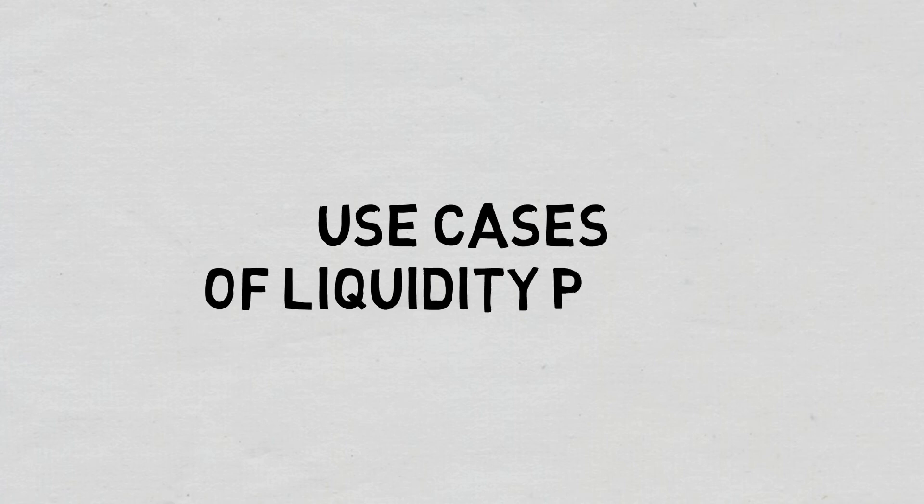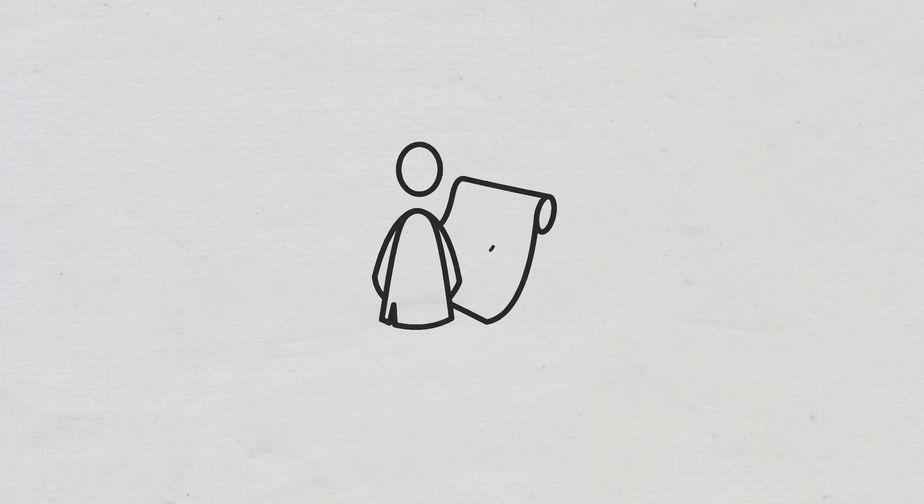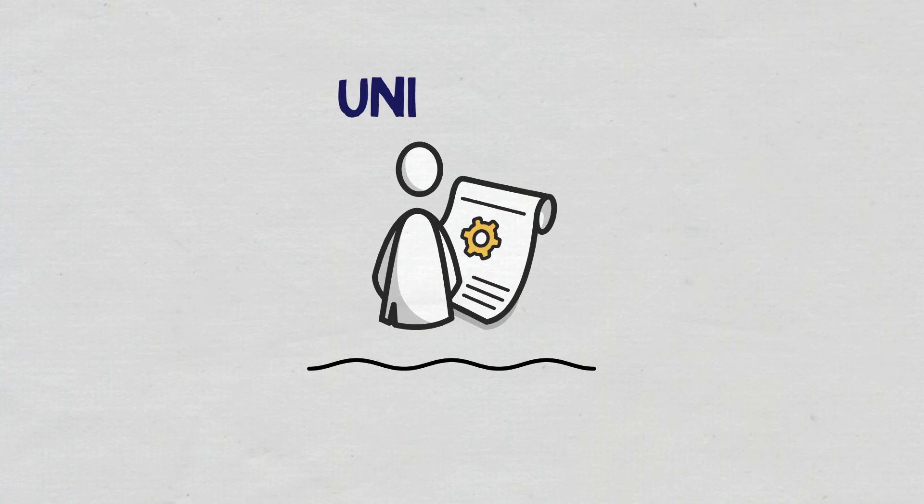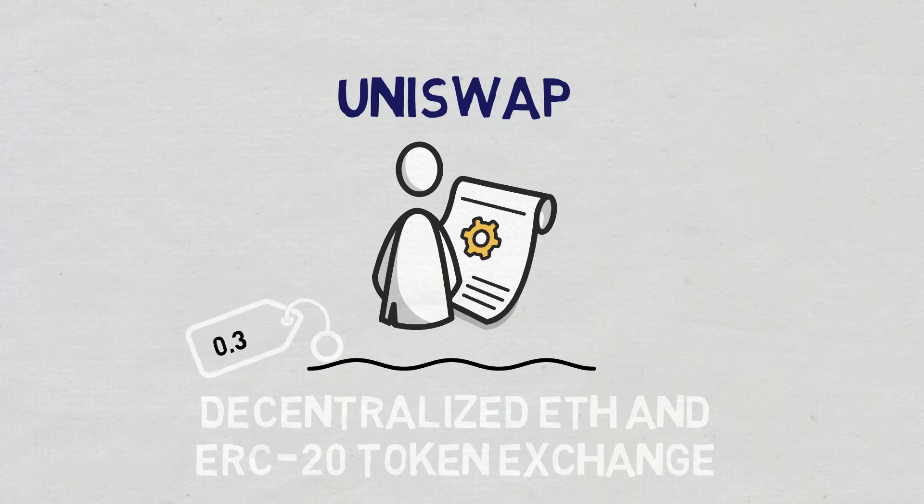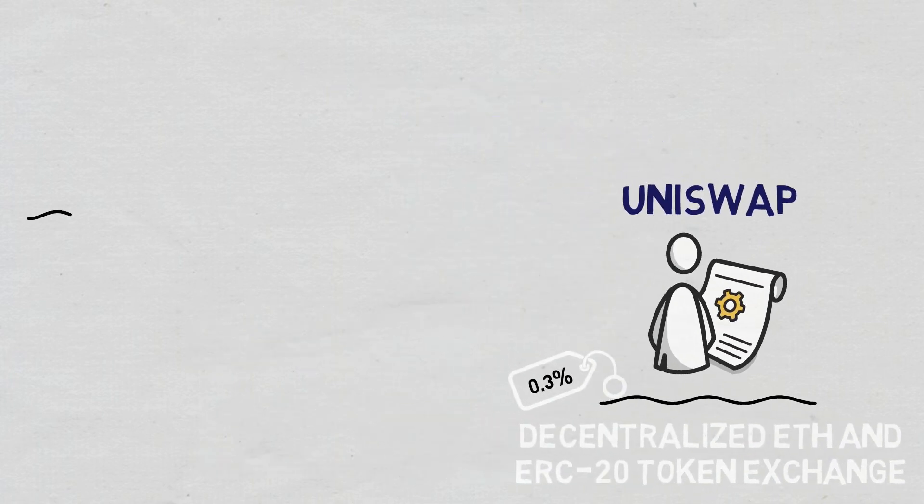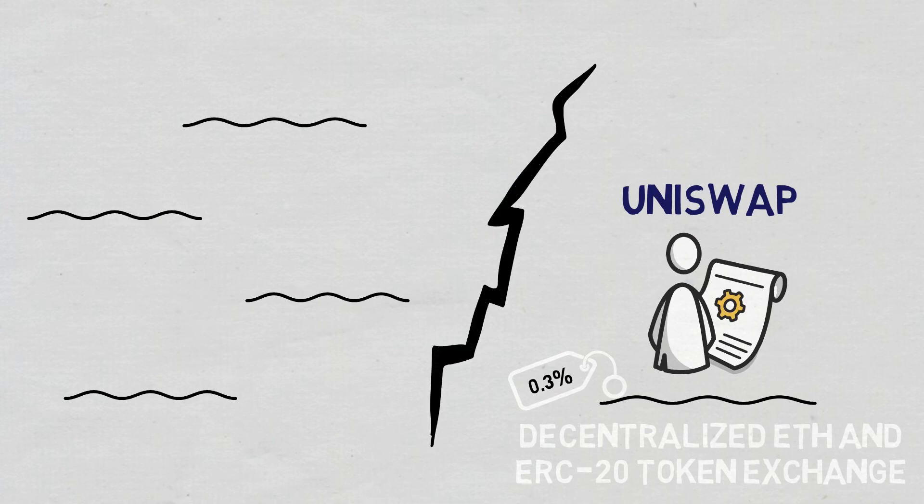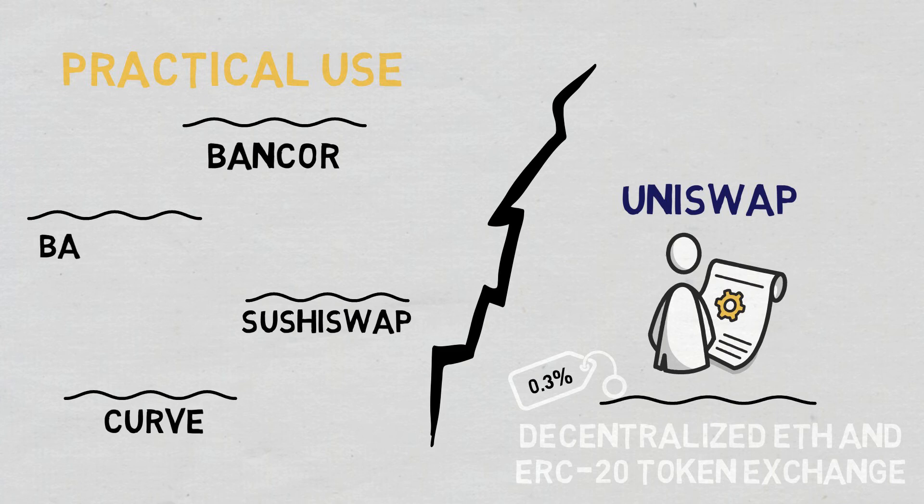Use cases of liquidity pools: One of the most popular DeFi protocols used to exchange cryptocurrency and that encourages the most basic forms of liquidity pools is Uniswap, a decentralized ETH and ERC-20 token exchange that charges a 0.3% trading fee on all its pools. However, there are several other DEXs that rely on the core principle of liquidity pools but differentiate themselves when it comes to practical use cases, such as Bancor, SushiSwap, Curve, and Balancer.